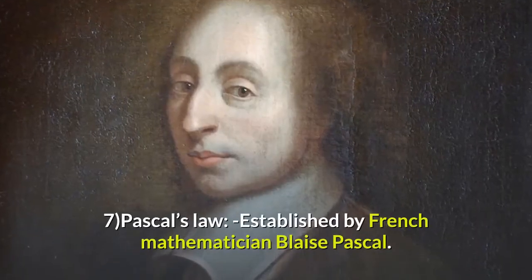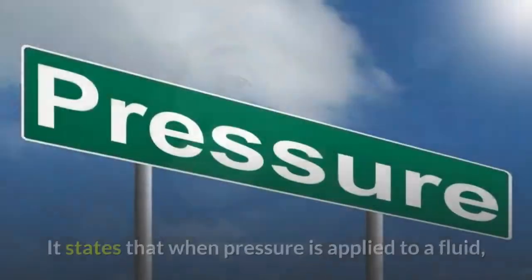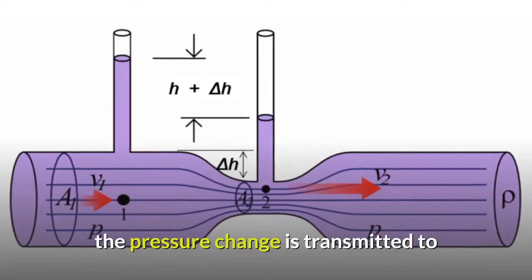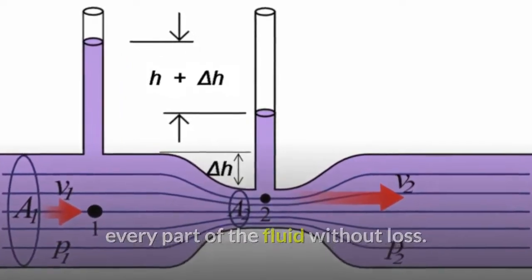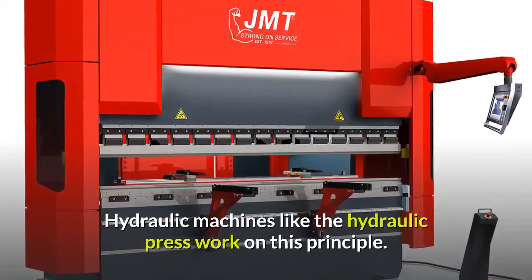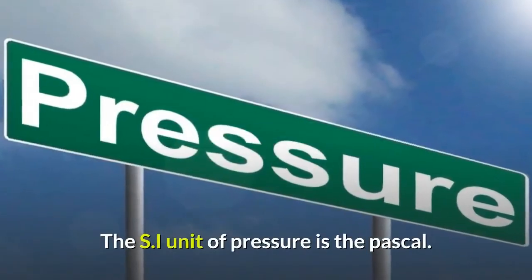Number 7: Pascal's Law, established by French mathematician Blaise Pascal. It states that when pressure is applied to a fluid, the pressure change is transmitted to every part of the fluid without loss. Hydraulic machines like the hydraulic press work on this principle. The SI unit of pressure is the pascal.